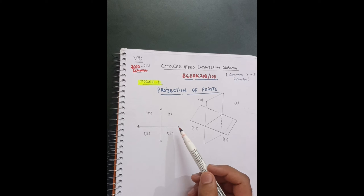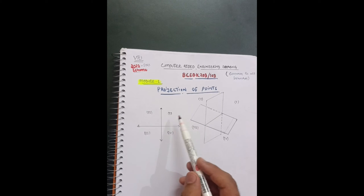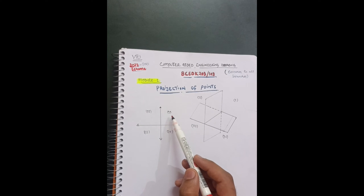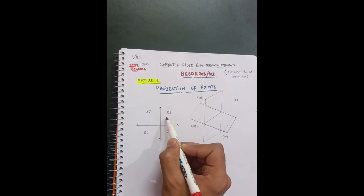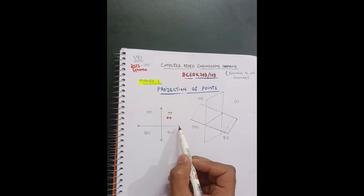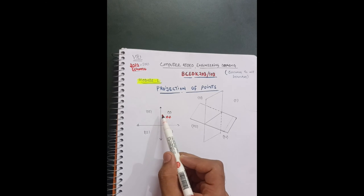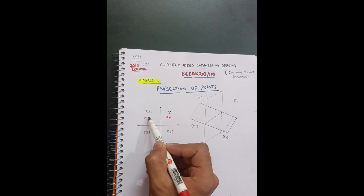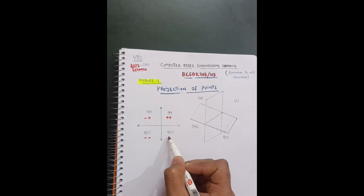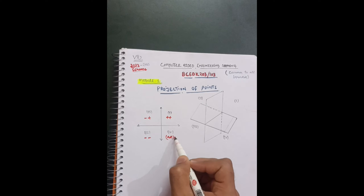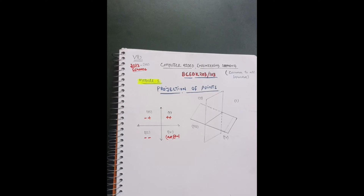We have to deal with the quadrant system, which you already know from mathematics — from around ninth or eighth class. This is a two-dimensional figure with the first, second, third, and fourth quadrants. The signs are standard: the first quadrant is positive-positive (x and y), the second is negative-positive, the third is negative-negative, and the fourth is positive-negative.